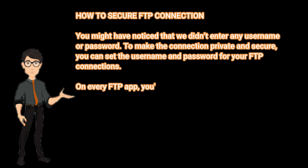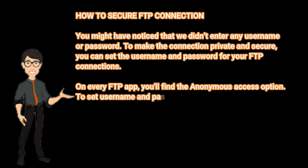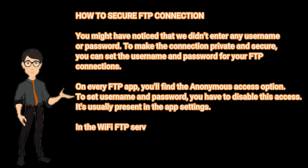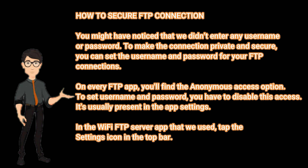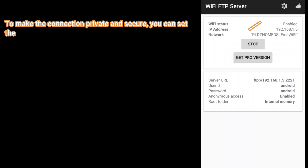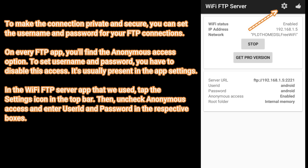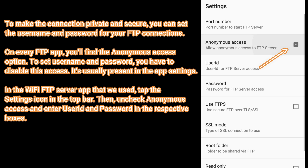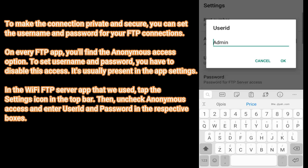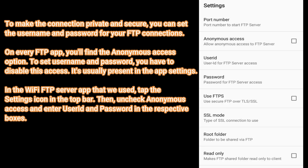On every FTP app, you'll find the anonymous access option. To set a username and password, you have to disable this option. It's usually present in the app settings. In the Wi-Fi FTP Server app, tap the settings icon in the top bar, then uncheck anonymous access and enter your username and password in the respective boxes.